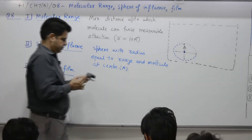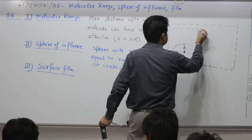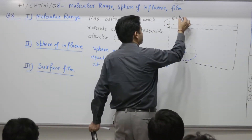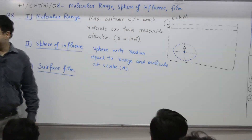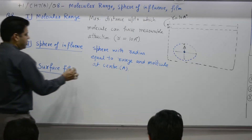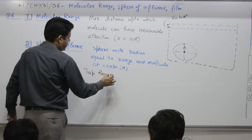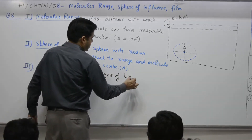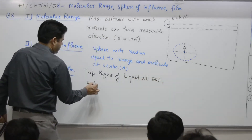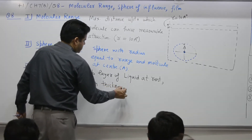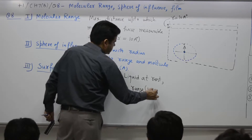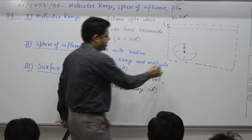The third concept is the surface film. It is the topmost layer of liquid at rest, with thickness equal to the molecular range — that is, 10 Angstrom. This is a competition question concept.